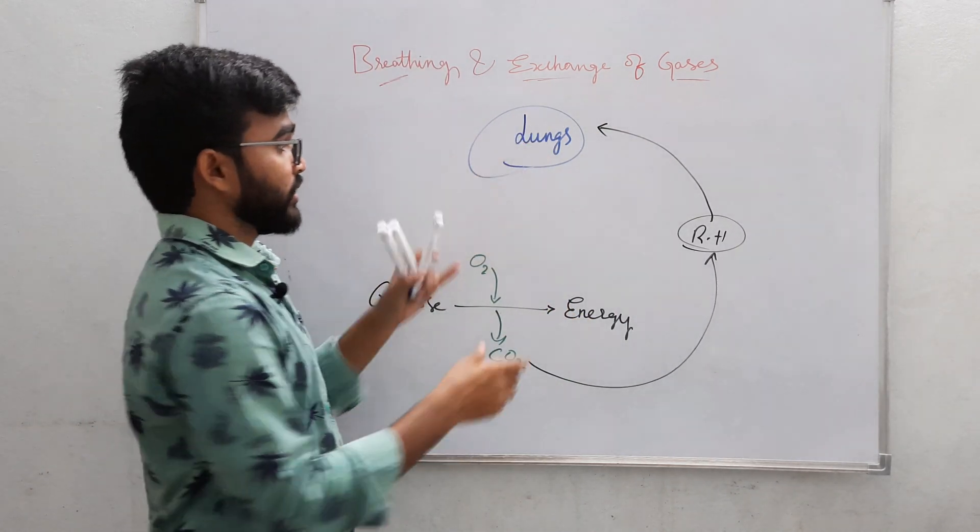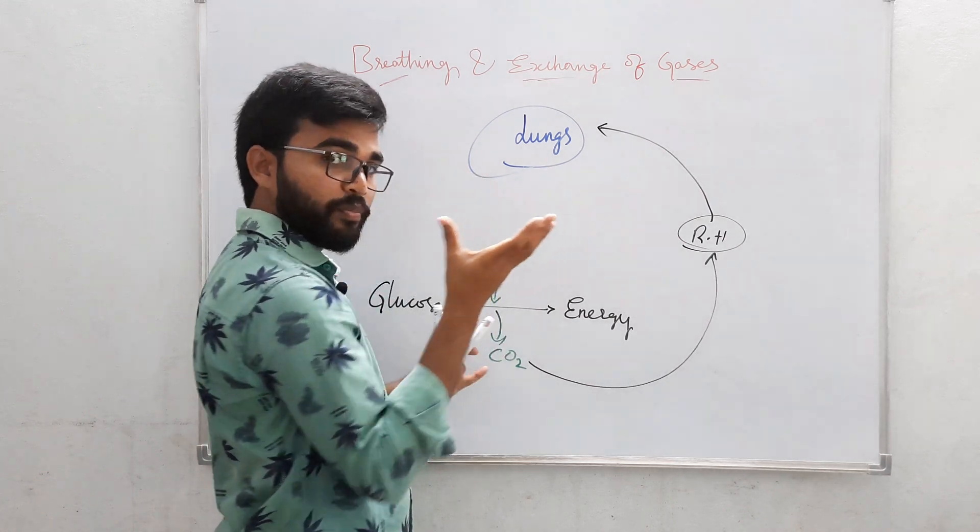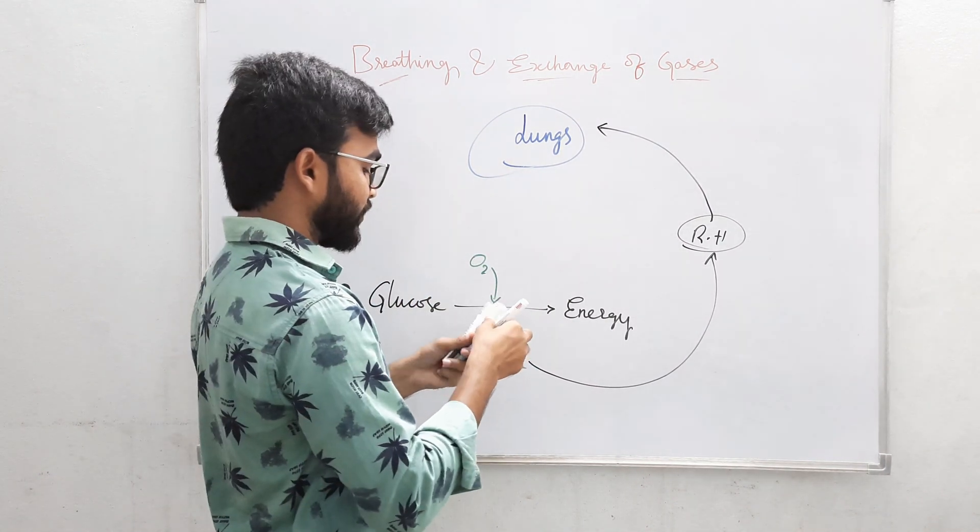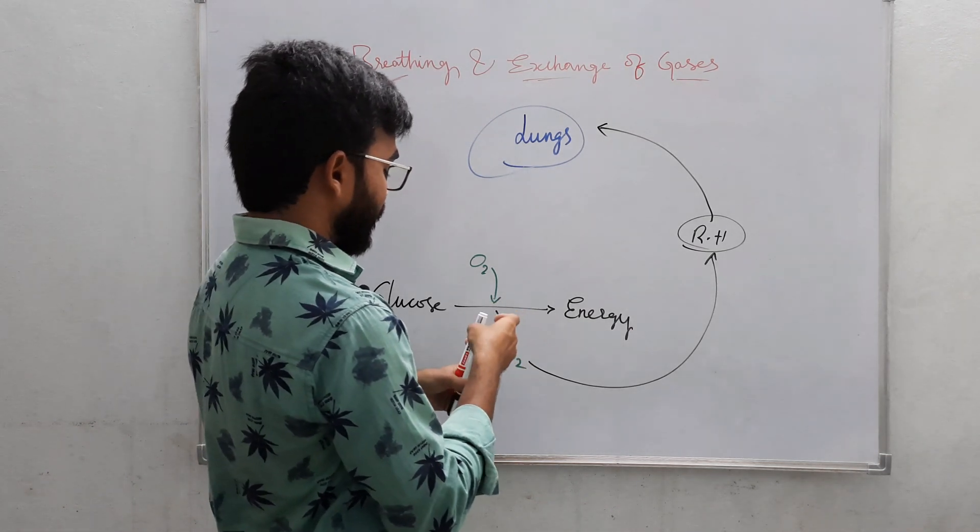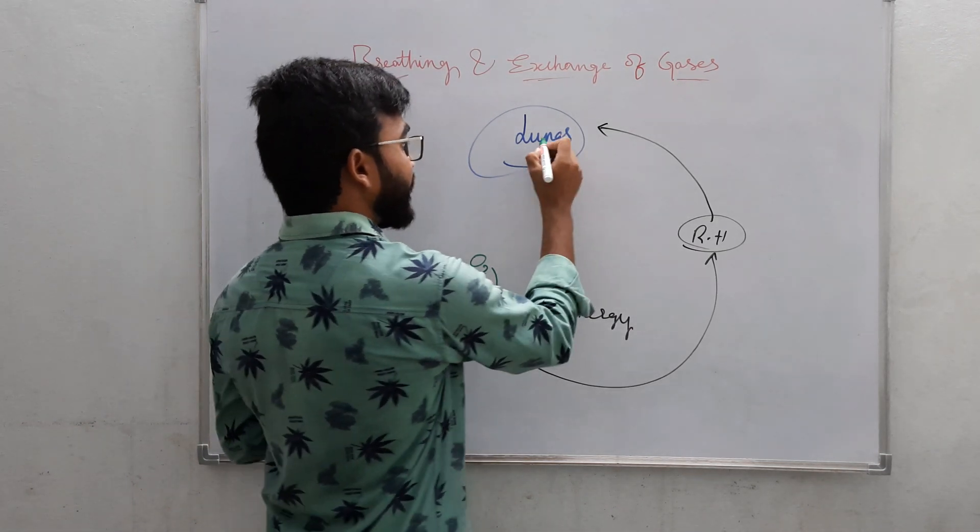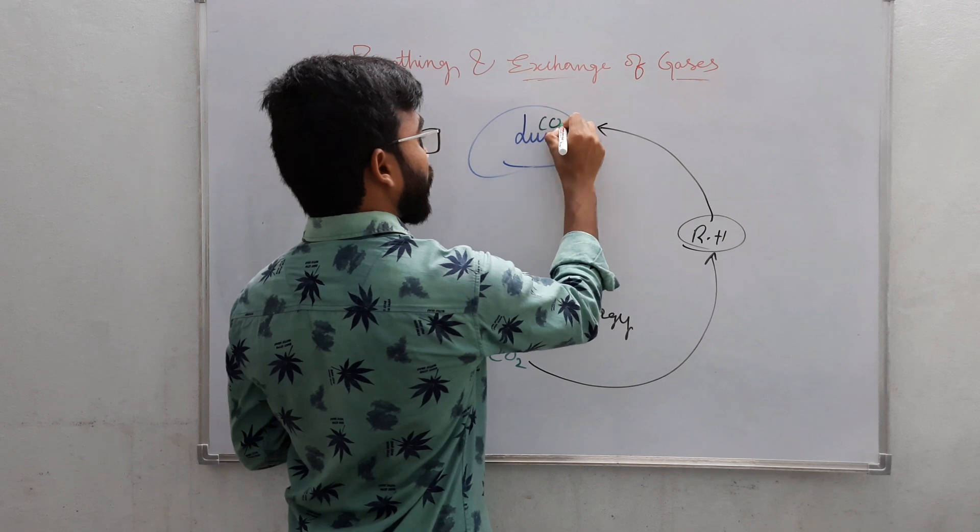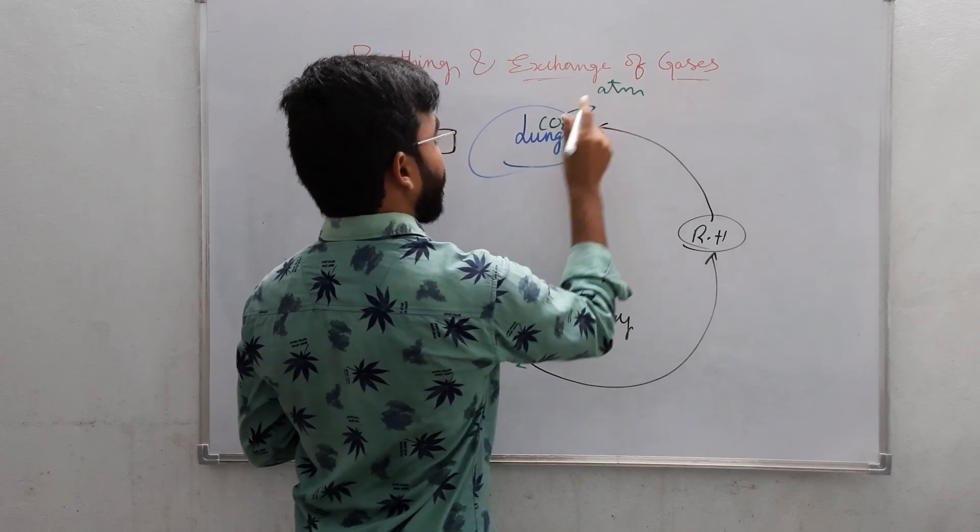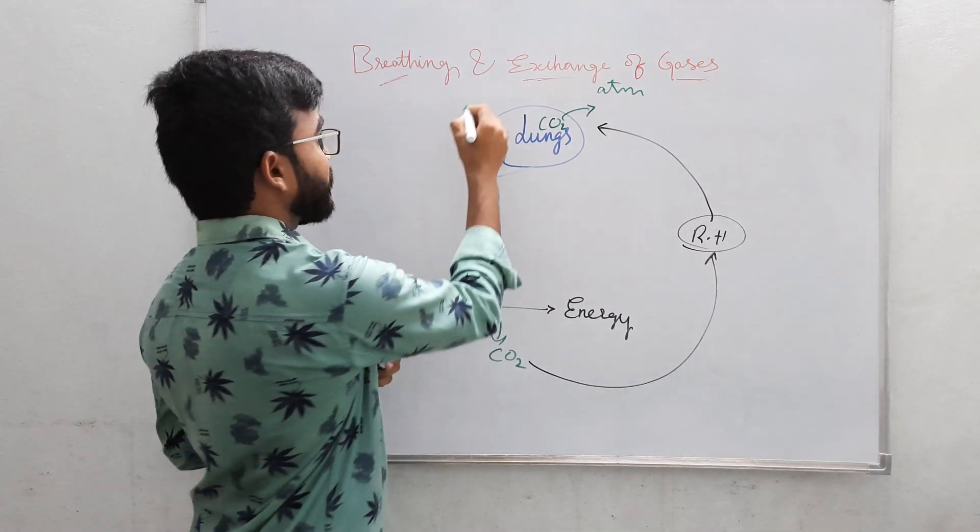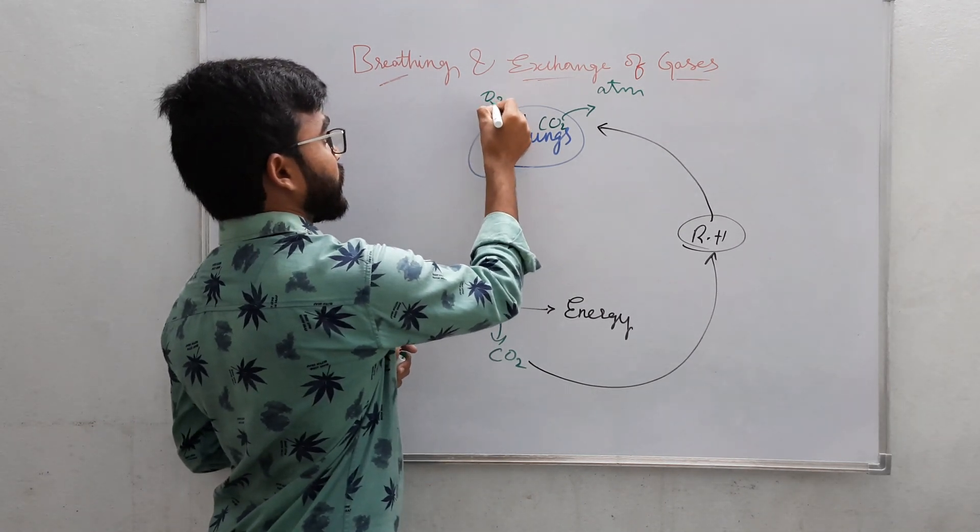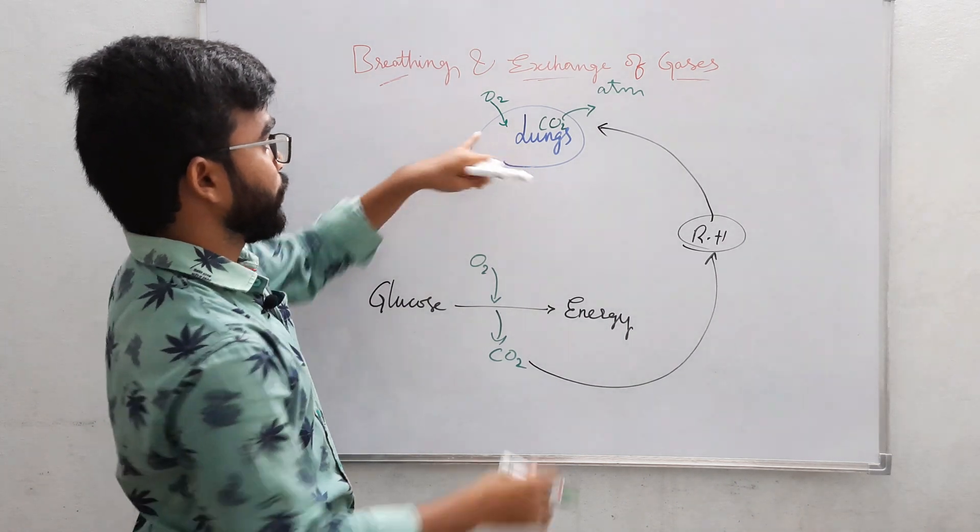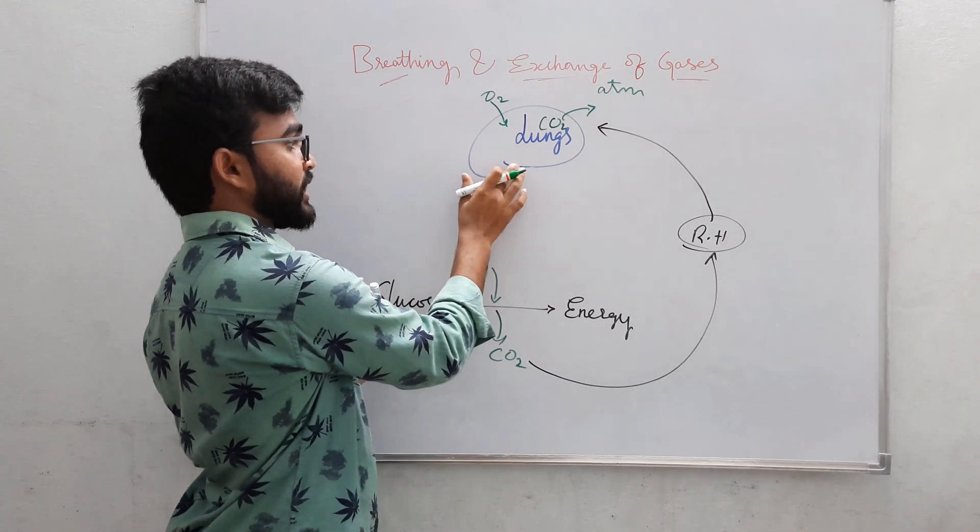Here in the lungs, the deoxygenated blood will be purified into the form of oxygenated blood, that is by releasing out CO2 into atmosphere and taking in O2. In this process of purification of blood, that is making the deoxygenated blood into oxygenated blood.